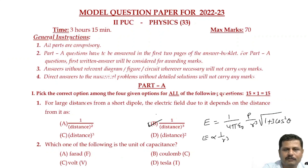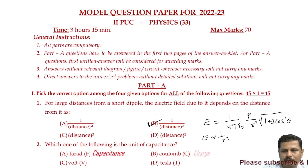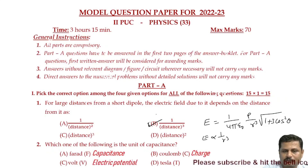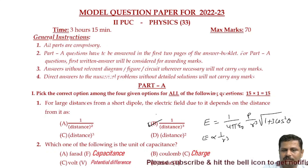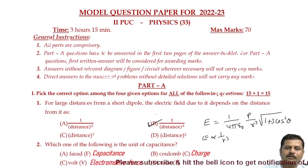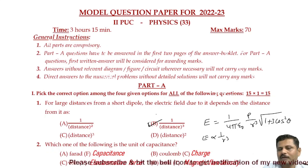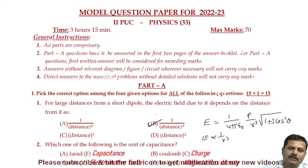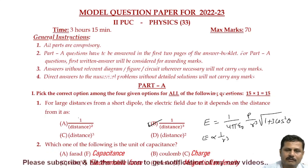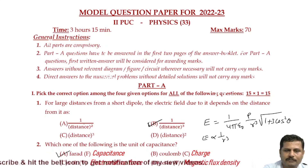Which one of the following is the unit of capacitance? We know that farad is the unit of capacitance, coulomb is the unit of charge, volt is the unit of electric potential or potential difference or electromotive force, and tesla is the unit of magnetic flux density. So the unit of capacitance is option A, that is farad.